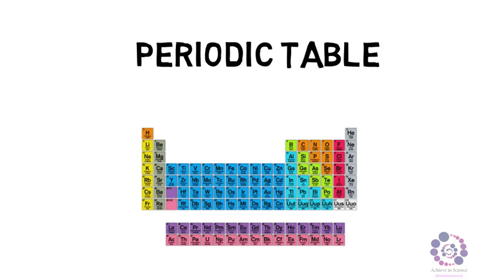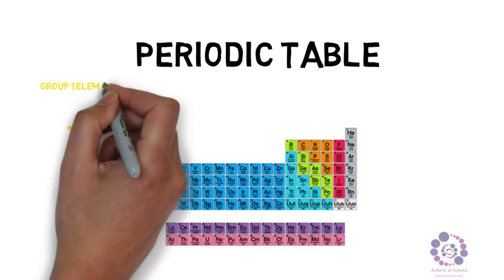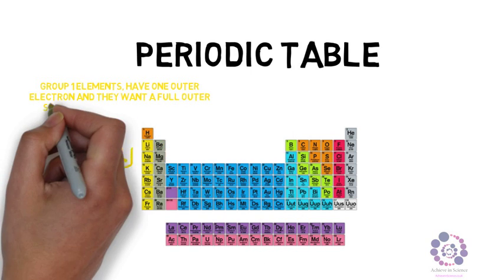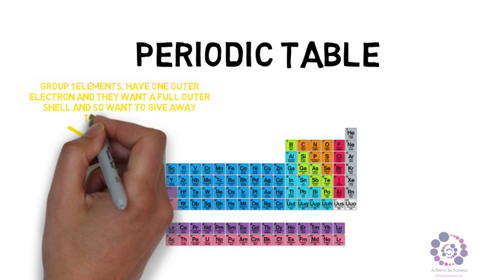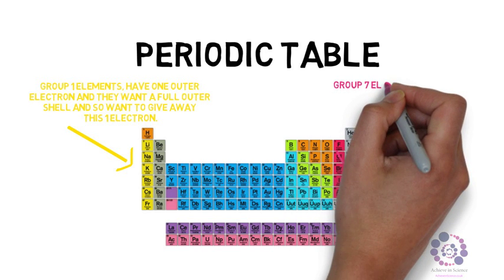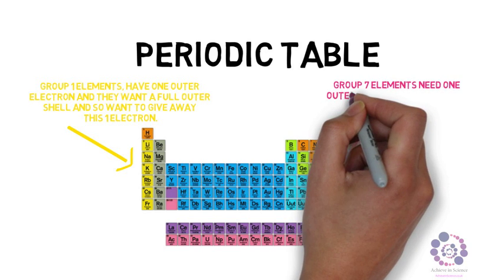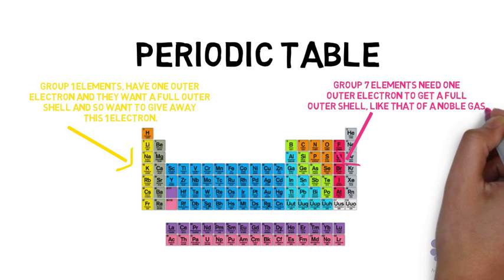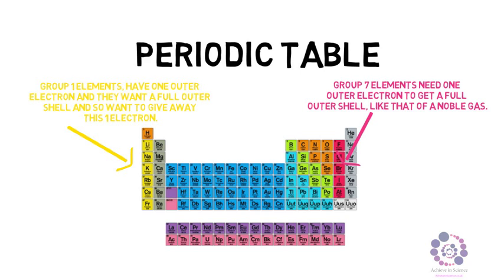The periodic table is made up of groups. First of all, group 1. Group 1 elements all have one outer electron and they want to have a full outer shell, so they will give away this one electron. On the other side we have group 7, which needs one outer electron in order to have a full outer shell just like that of a noble gas.